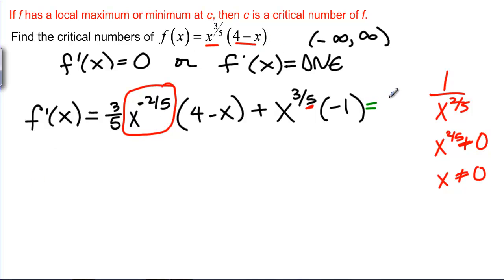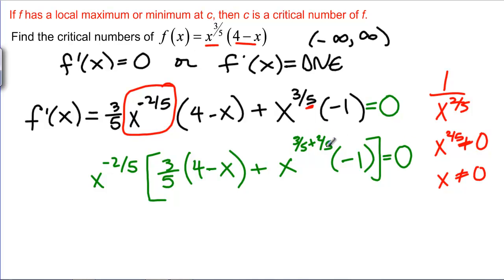But what about when this equation equals 0, how do we solve for that? Well this is tricky algebra. What we're going to do is I'm going to factor out an X to the negative 2 fifths out of this equation. And that means that in the first term I'm left with 3 fifths times 4 minus X. And in the second term I have pulled out a negative exponent. So usually when you pull out like a regular exponent you're pulling out a positive number so you subtract that. Now we're pulling out a negative number so we're actually going to add it. So we're going to have X to the 3 fifths plus 2 fifths times negative 1. Now it turns out that 3 fifths plus 2 fifths is just 1.